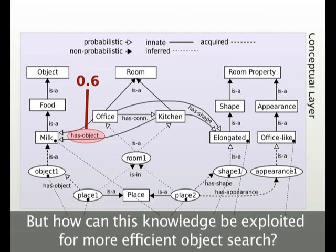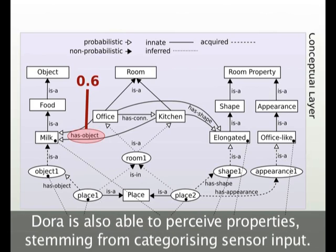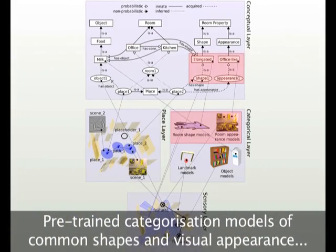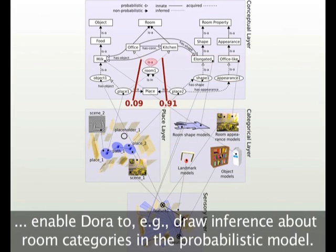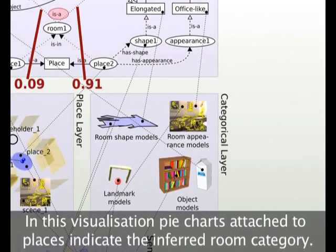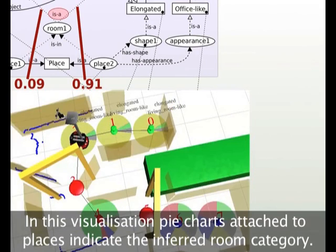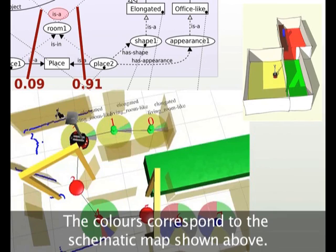DORA is also able to perceive properties stemming from categorising sensor input. Pre-trained categorisation models of common shapes and visual appearances enable DORA to draw inference about room categories in the probabilistic model. In this visualisation, pie charts attached to places indicate the inferred room category. The colours correspond to the schematic map shown above.